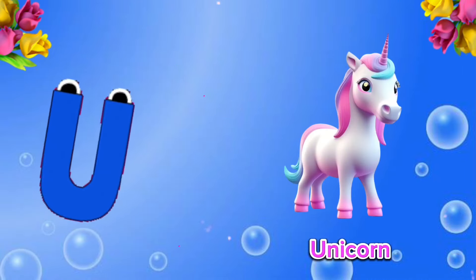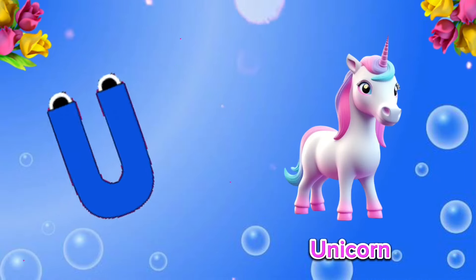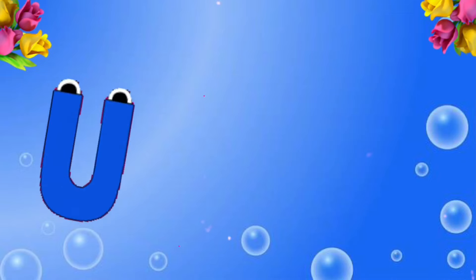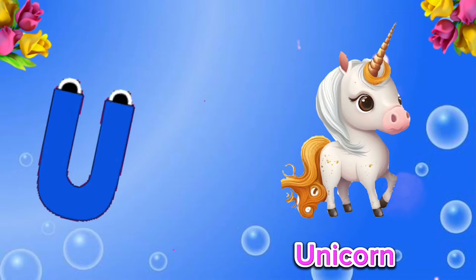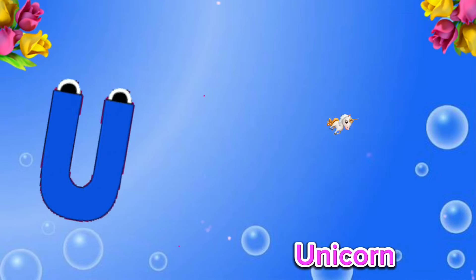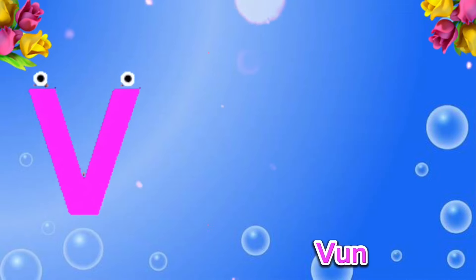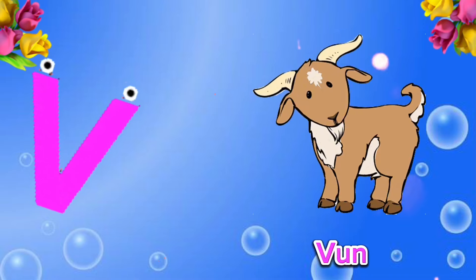U is for Unicorn. U-U-Unicorn. U is for Unicorn. U-U-U. V is for Vicunia.